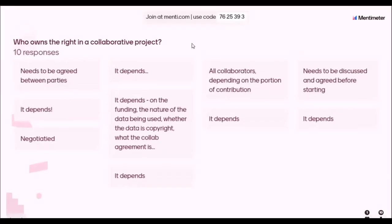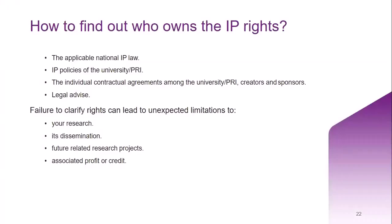It is not that hard to find out who owns the right if you are affiliated to any university or research centre. There should be staff who deal with ethical and legal compliance in research. You can also find it by looking at the applicable national IP laws, IP policies of the university, and individual contractual agreements among the university, creators, and sponsors. As a last resort, you can seek legal advice to be compliant, because failure to do so can cause serious issues for the future uses of your research, such as its dissemination, any future related research projects, or profit associated with it.